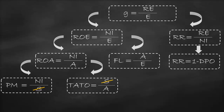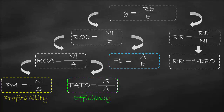We are splitting the return on equity into three components, and this is essentially what the DuPont analysis is. The formula is the profit margin times the total asset turnover times the financial leverage. The profit margin ratio is a profitability ratio that measures operating efficiency. The total asset turnover ratio is an efficiency ratio that measures asset use efficiency, and the financial leverage ratio is a solvency ratio that measures financial leverage.